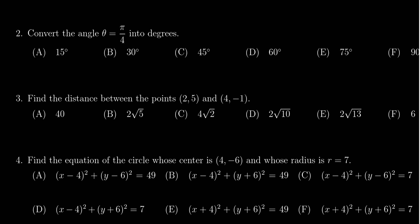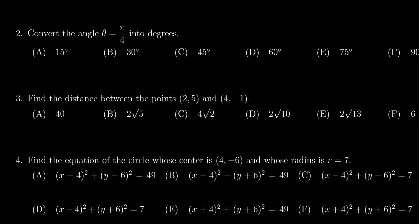In this video, we provide the solution to question number two for practice exam number one for Math 1060. We're given the angle theta equals pi over 4, which is in radian measure, and we're asked to convert it into degrees.